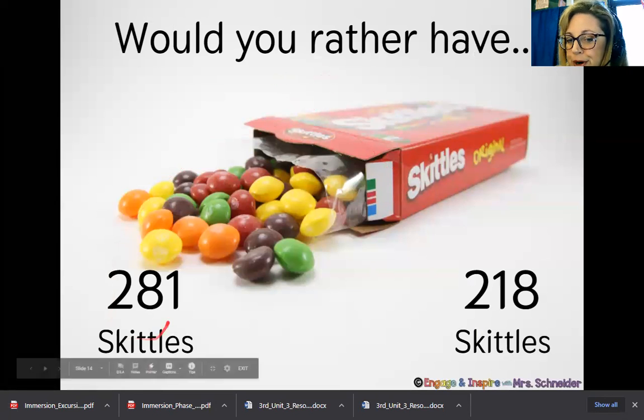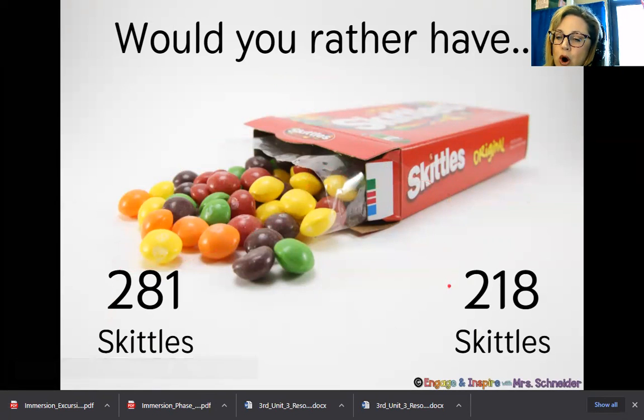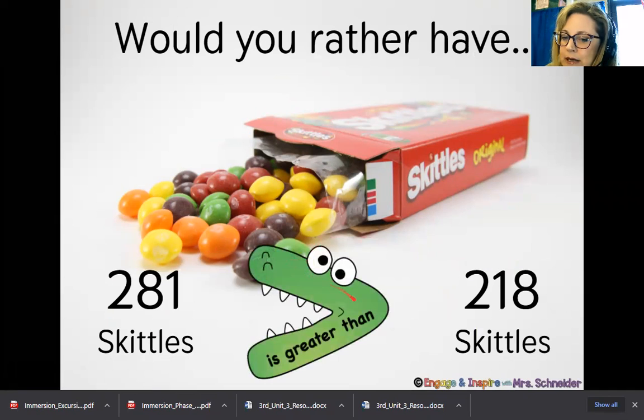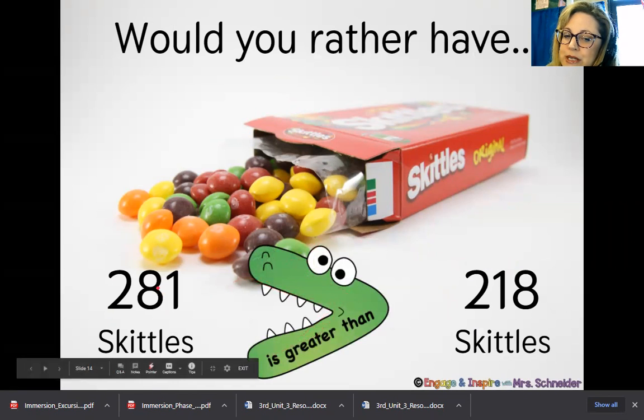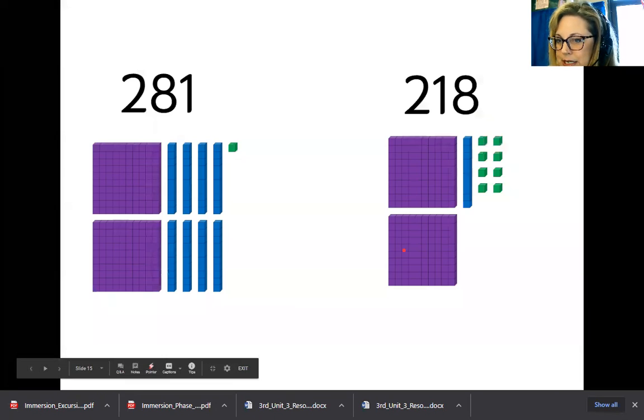Would you rather have 281 Skittles or 218 Skittles? Notice we're taking the same digits. We're placing them in a different place, so they may have a different value. It's called different value or how much it's worth. Same numbers, we just place them in a different spot. So of course, the alligator's mouth is open towards the more Skittles. 281 Skittles is greater than 218 Skittles.